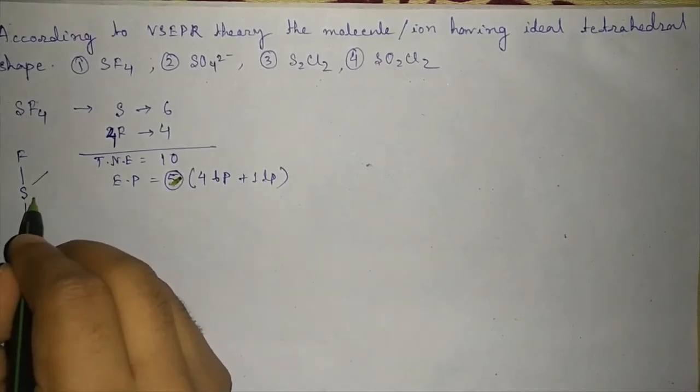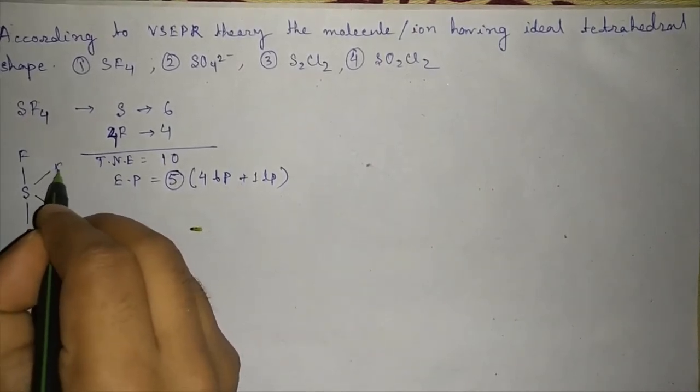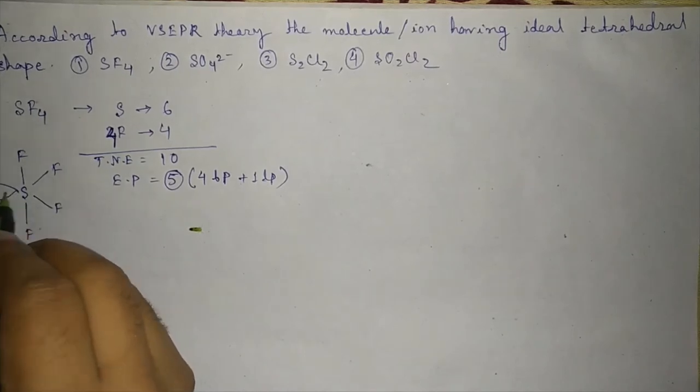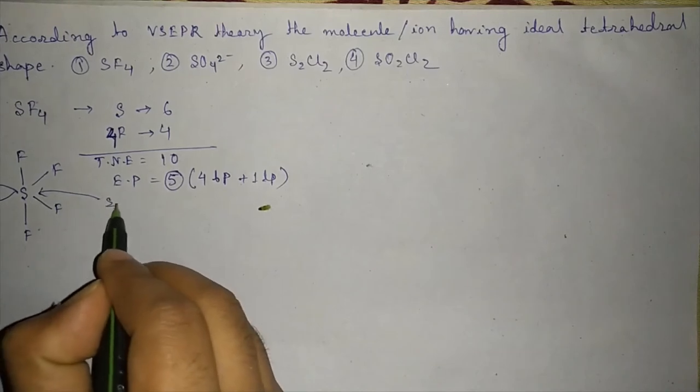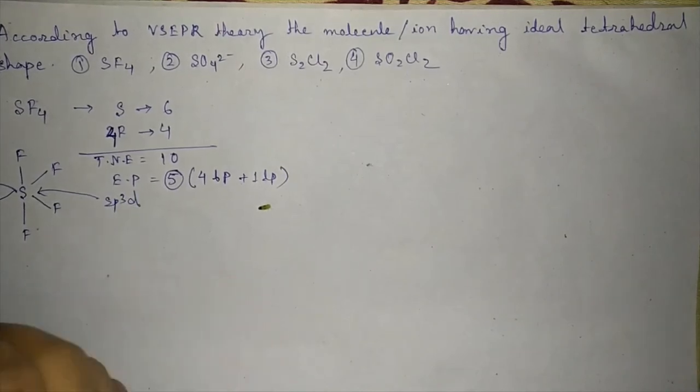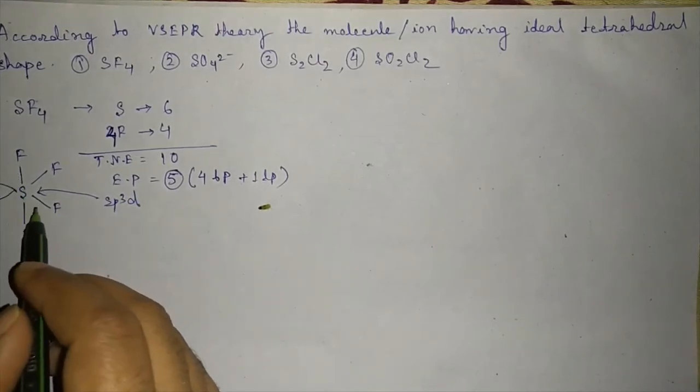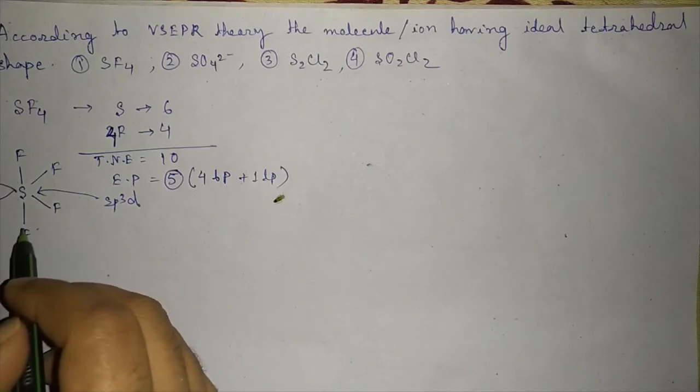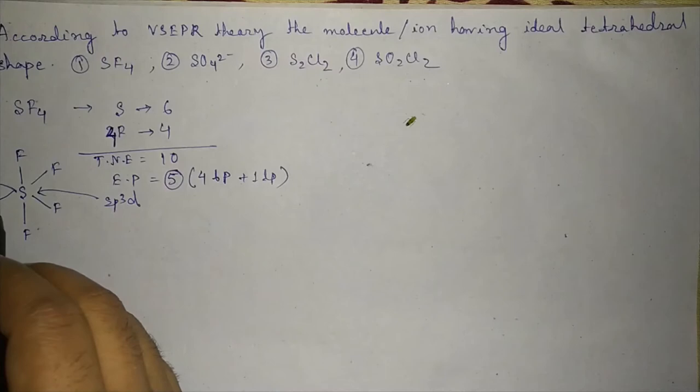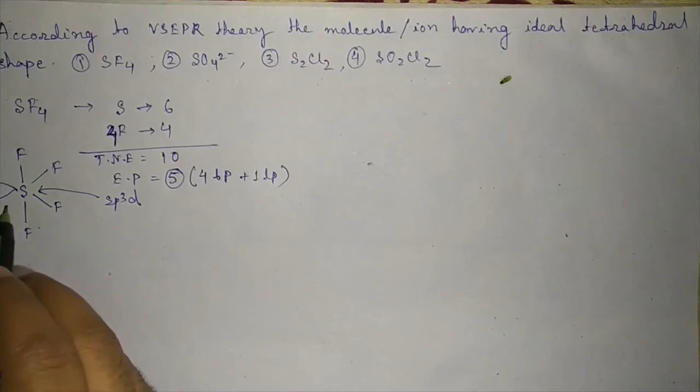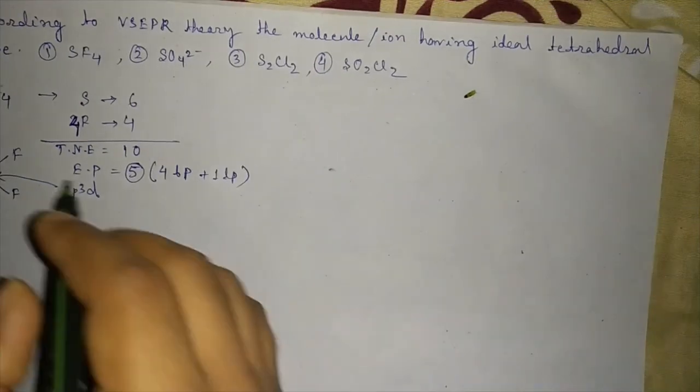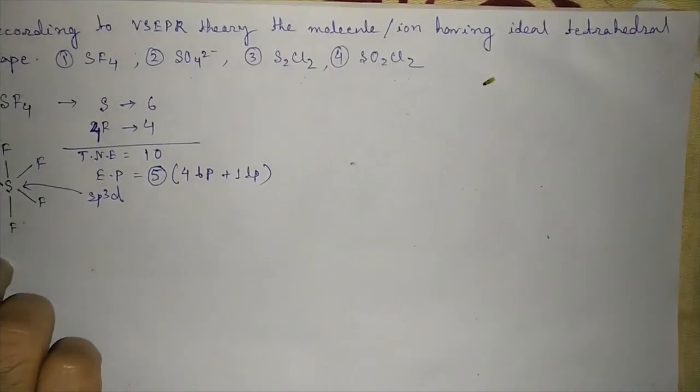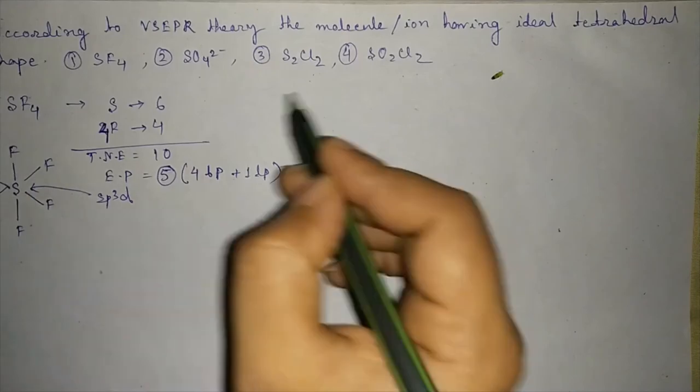F, F, F. For sp3d, its geometry is trigonal bipyramidal and the lone pair will occupy in equatorial position.